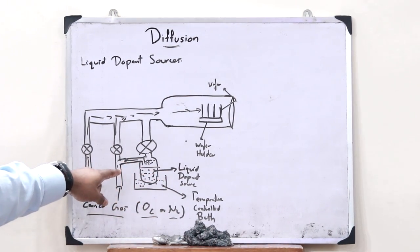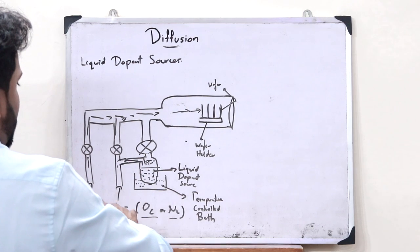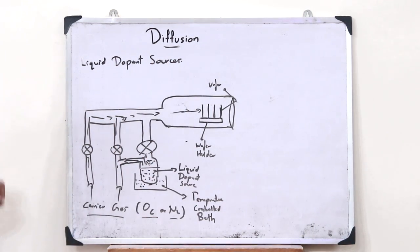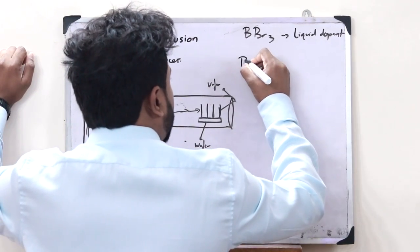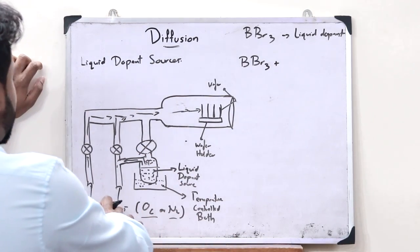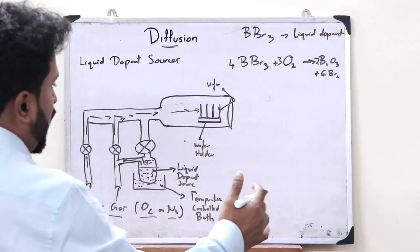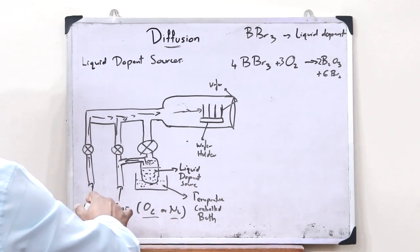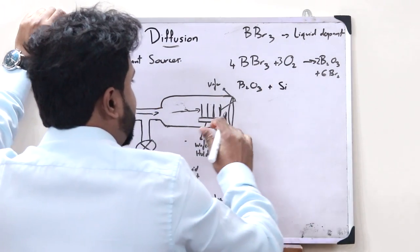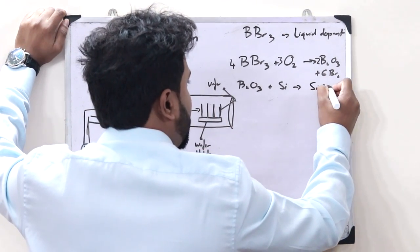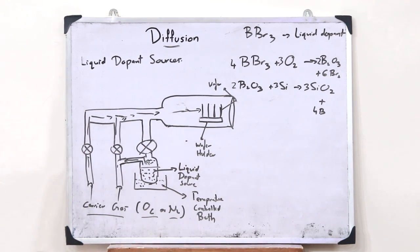This particular liquid dopant source is converted into its vaporized form by heating it with the help of this particular temperature-controlled bath. These vapors then get mixed with the carrier gases and get diffused onto this particular wafer. A typical example of a liquid dopant source is boron tribromide, BBR3. When this particular BBR3 reacts with these particular carrier gases, that is O2, we get boron trioxide and 6Br2. When this particular boron trioxide, B2O3, reacts with this particular silicon wafer, we get SiO2. This is a typical example of diffusion from a liquid dopant source.